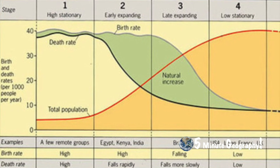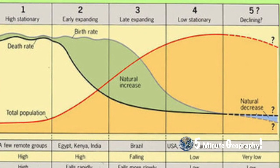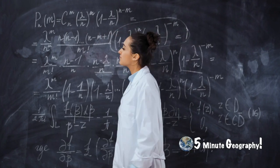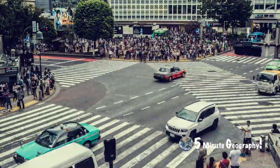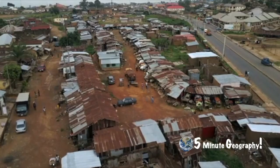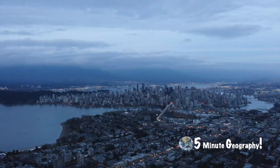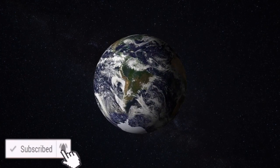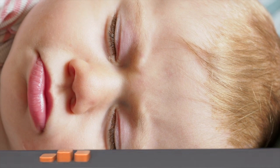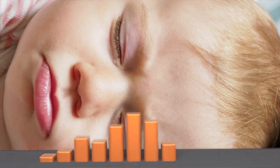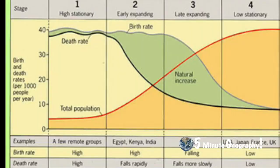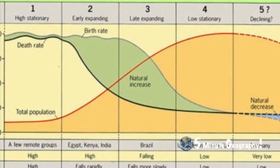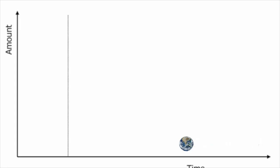The demographic transition model has been developed by researchers to help explain population change over time. Researchers and demographers have noticed that as an economy develops both economically and socially, the population goes through massive changes — from high birth rates and high death rates to low birth rates and low death rates. The demographic transition model helps predict global patterns in terms of population and is broken into five stages.